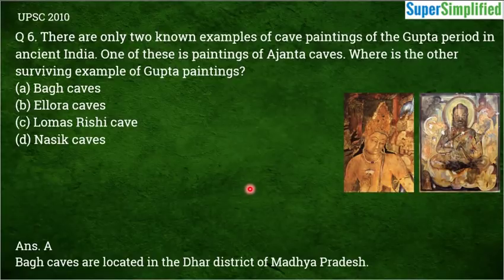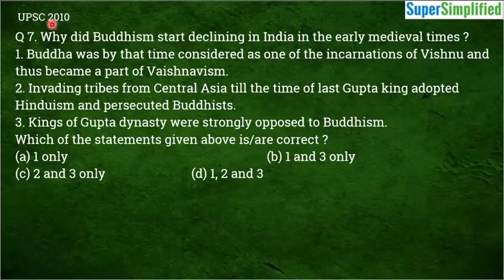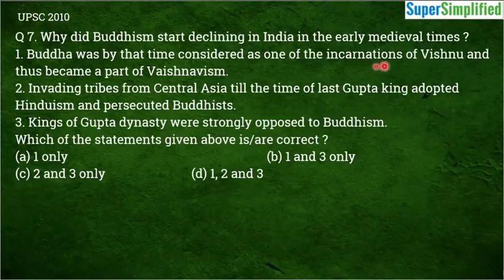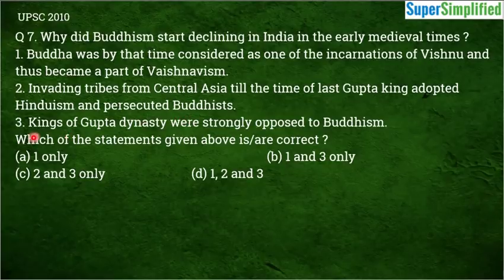Question number 7, from UPSC 2010: Why did Buddhism start declining in India in the early medieval times? Statement 1: Buddha was by that time considered as one of the incarnations of Vishnu and thus became a part of Vaishnavism. Statement 2: Invading tribes from Central Asia, till the times of the last Gupta King, adopted Hinduism and persecuted Buddhists. Statement 3: Kings of the Gupta dynasty were strongly opposed to Buddhism.